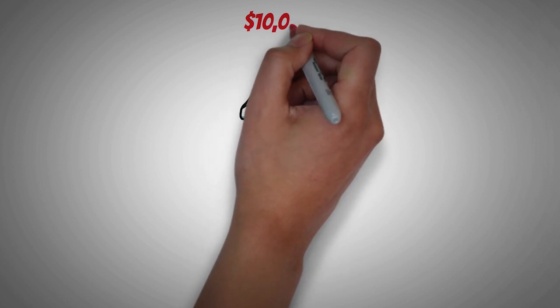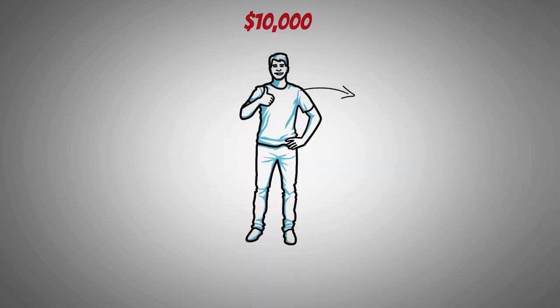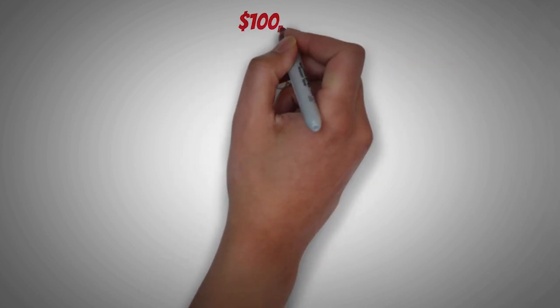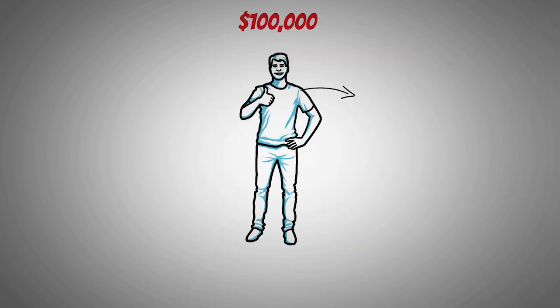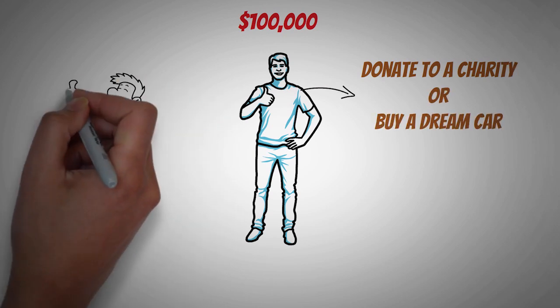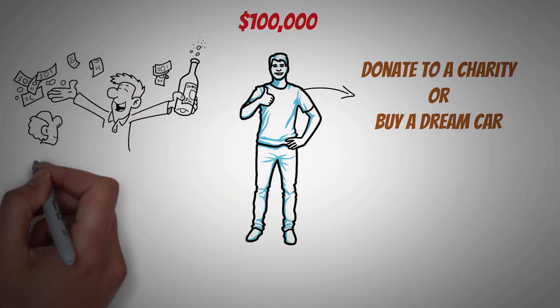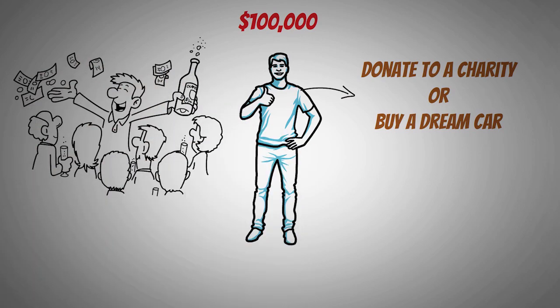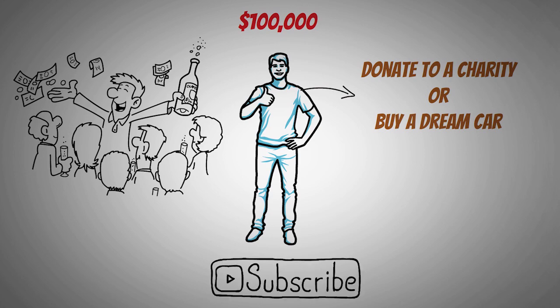If you pay off $10,000 in debt in a year, you may splurge on a vacation or a shopping spree. If you earn $100,000 in passive income in a lifetime, you may donate it to charity or buy a dream car. Whatever it is that makes you happy and motivates you to keep going, you do it without guilt or regrets. You celebrate your progress and reward yourself for your achievements. Consider hitting subscribe if you're enjoying this video.